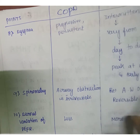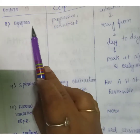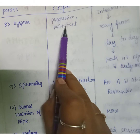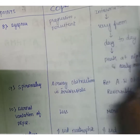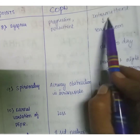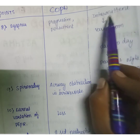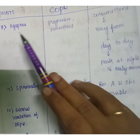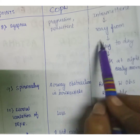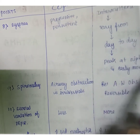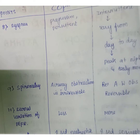For dyspnea, in COPD it is progressive and persistent. In asthma, dyspnea is intermittent and varies from day to day, usually peaking at night and early morning.